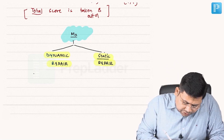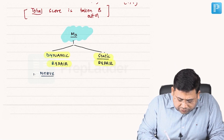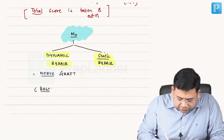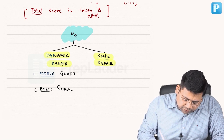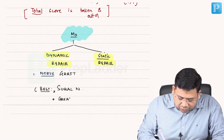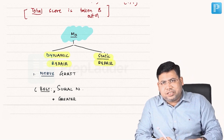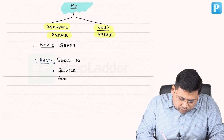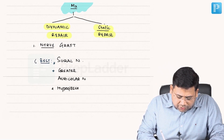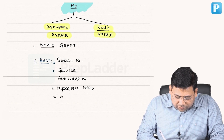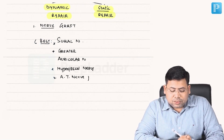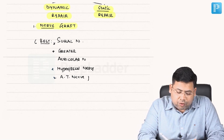In dynamic repair, the first option is the nerve graft. The best nerve graft we have is the sural nerve. Others include the greater auricular nerve — which is most commonly used because it is routinely sacrificed during surgery — the hypoglossal nerve, and the auriculotemporal nerve. So many nerves can be used, and this is the most promising dynamic repair option.